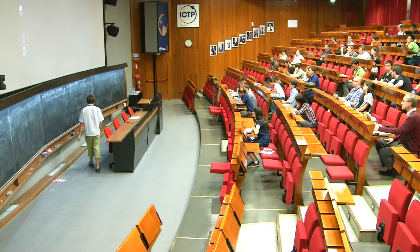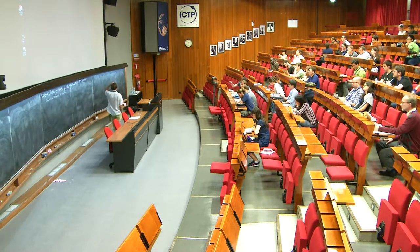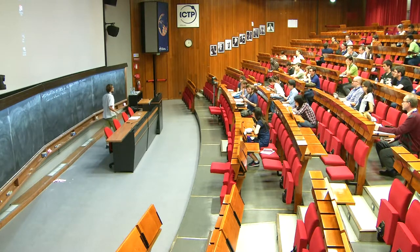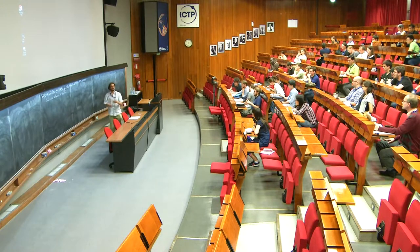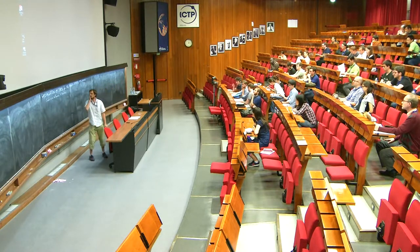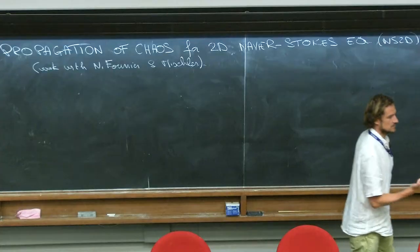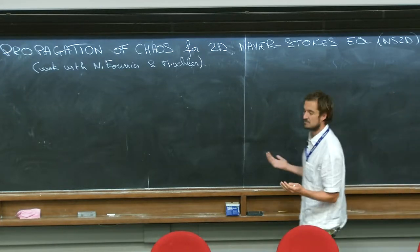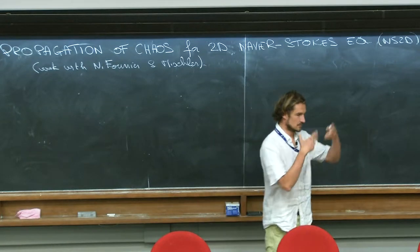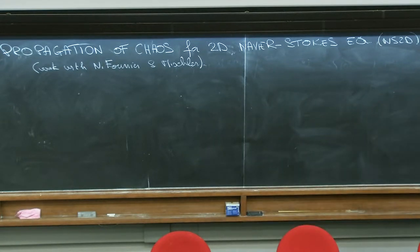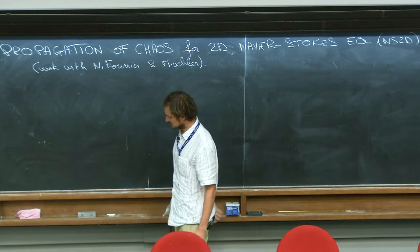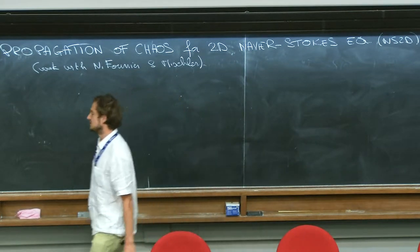It's about the 2D Navier-Stokes equation. To comment on the title: propagation of chaos — I will explain what it means. Chaos here is not in the sense of sensitivity to initial conditions, but rather what is called molecular chaos or chaos in the sense of Boltzmann, meaning that when you look at a large system of particles and pick two at random, they should be roughly independent. I will explain this a bit later.